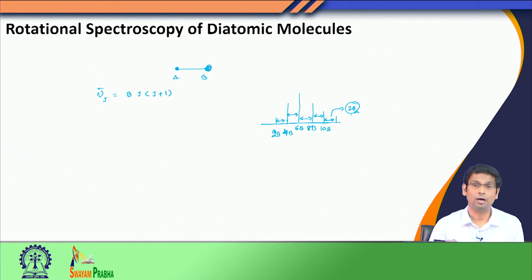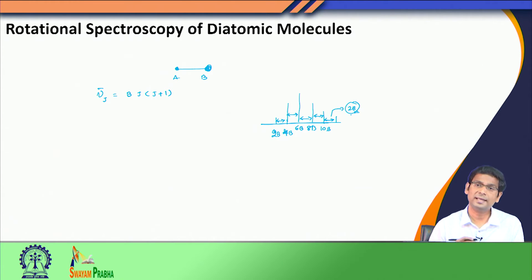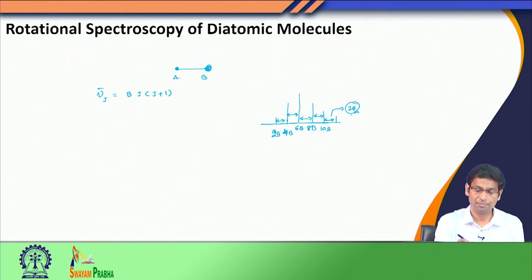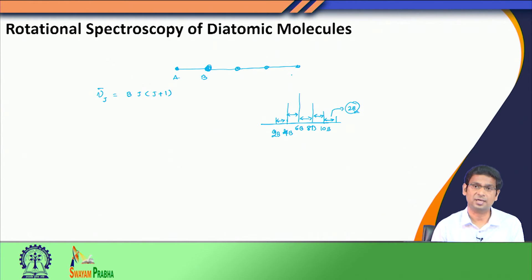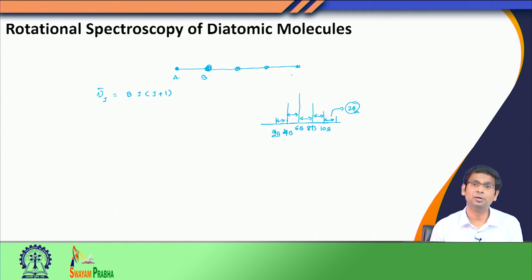Since it is a diatomic molecule, we only have one bond distance, which can be easily obtained from the 2B value. When we extend this discussion to polyatomic molecules, let us first restrict ourselves to linear polyatomic molecules — whether triatomic or tetratomic, it does not matter — as long as the molecule remains linear. It still satisfies the classification condition: I_A is 0, and I_C and I_B are both nonzero and greater than I_A. So even for a polyatomic linear molecule, the classification remains the same as for a diatomic molecule.